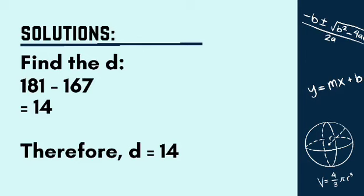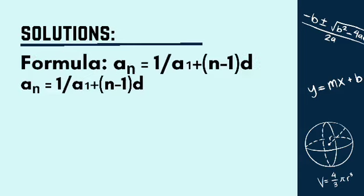Now that we have a common difference, we will now try to solve for the first term using the formula aₙ = 1/(a₁ + (n-1)d). Let's substitute our given to our formula.